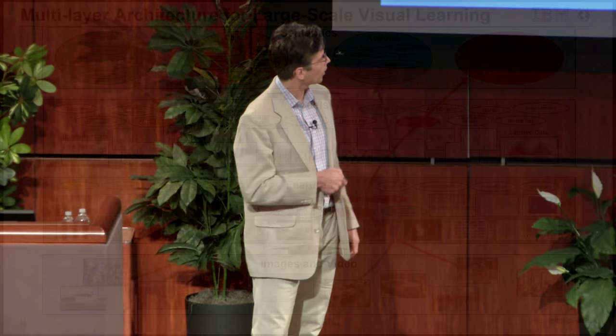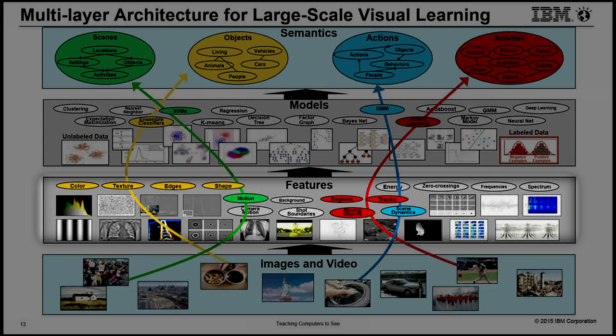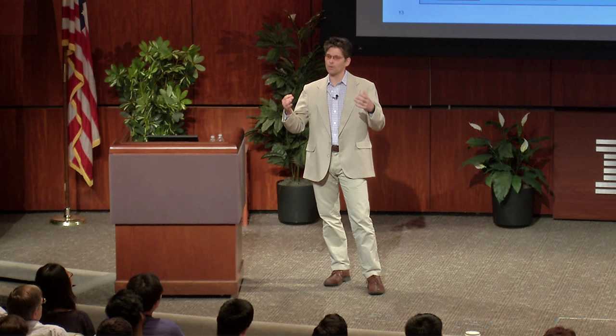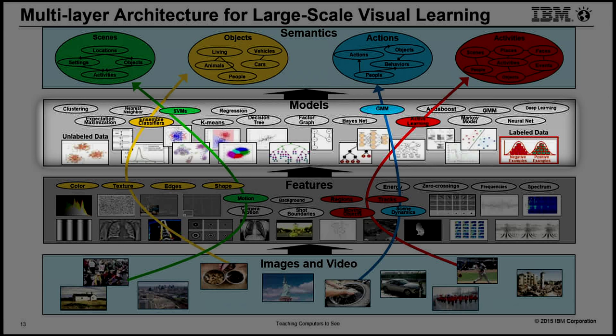Machine learning is giving us a new way to address this problem through data and algorithms. We have the images and videos, we want to produce semantic labels, so what do we work on in between? There are essentially two important layers: first, a set of features to represent the content of these images and videos — including ways to describe color, texture, edges, shape, motion, and so on. This gives us a space in which the computer can learn discrimination or do discovery of important concepts. Then there's a layer of models where we can have a lot of innovation in connecting features to different semantic entities.